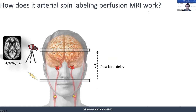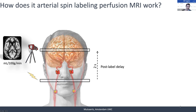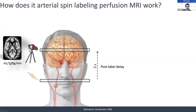Very briefly, how arterial spin labeling perfusion MRI works: other than with a normal MRI image, we label — and that labeling refers to the inversion of magnetization in a plane proximal to where we will take our image. We do this with spins, which is MRI jargon for water protons. Only the ones that will flow up through the arteries give you perfusion — that's why it's called arterial spin labeling. We magnetically invert spins in this plane, wait for a certain delay to allow these arterial spins to flow to the brain, then create an image representing how much blood has perfused 100 grams of brain tissue each minute.